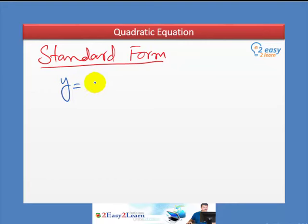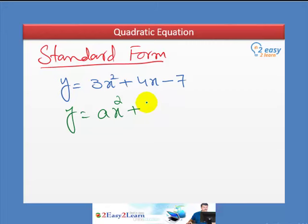So, y equals 3x square plus 4x minus 7. So, there are three terms in standard form: x square, then the power reduced, 1, then there is a constant term. And we can write in general form. So, y equals ax square plus bx plus c.